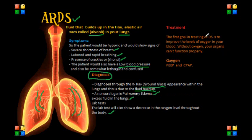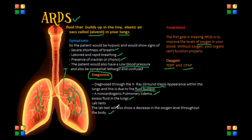The first goal in treating a patient with ARDS is to improve the levels of oxygenation in the blood, because without oxygen the organs can't function properly. There are various ways to give supplemental oxygen, including mechanical ventilation. The mechanical ventilator pushes air into the lungs and forces some of the fluid out of the air sacs. The most common form of mechanical ventilation would include PEEP, or positive end-expiratory pressure, which is a method of ventilation where airway pressure is maintained above atmospheric pressure. Another method is CPAP, or continuous positive airway pressure, which applies mild air pressure on a continuous basis to keep the airway continuously open.